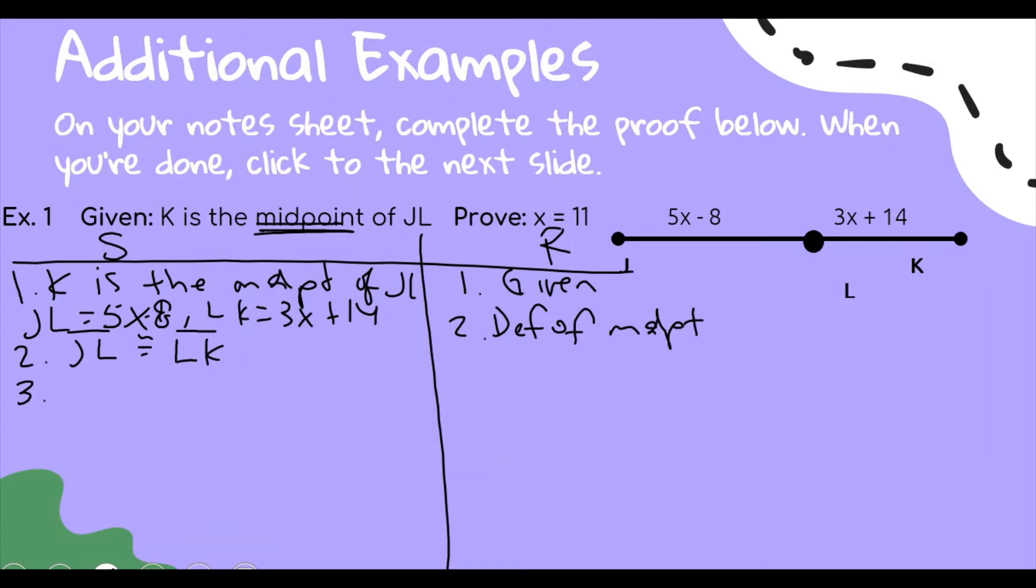Now I'm going to think of what I can say about what I just said. So I just said congruent, so now what I can say is that they are equal to each other, and that is the definition of congruent. Congruent segments are equal to each other. Next, we can substitute.